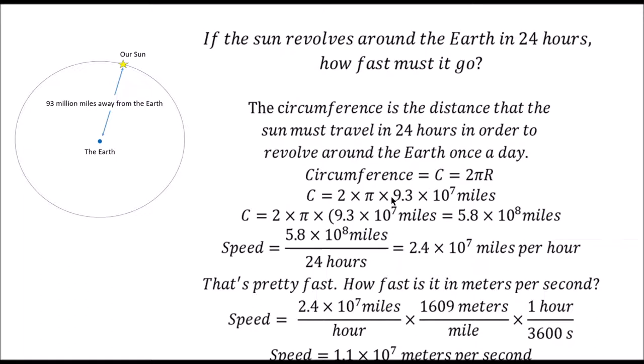This means the sun would have to travel 5.8 × 10^8 miles every 24 hours, or 2.4 × 10^7 miles per hour. Converting using 1609 meters per mile and 3600 seconds per hour, this equals 1.1 × 10^7 meters per second.